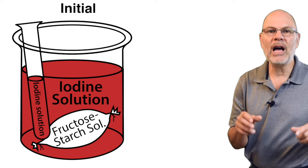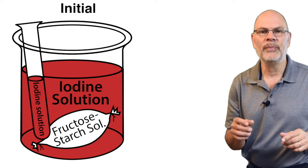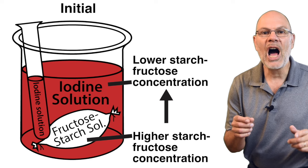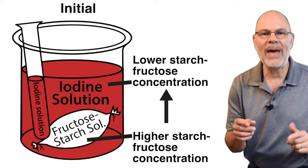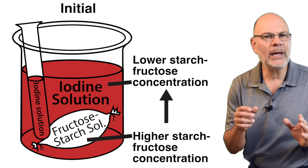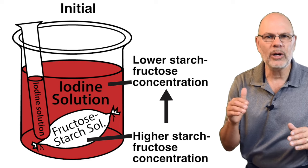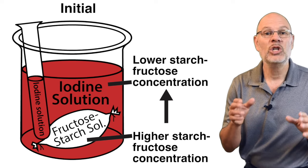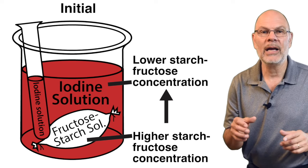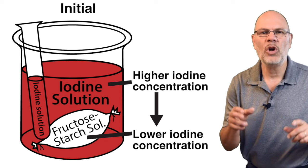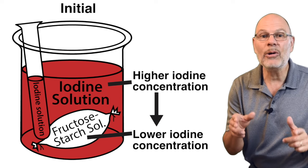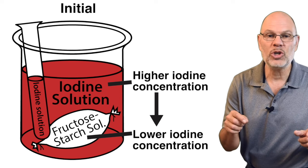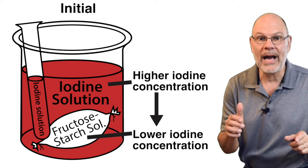First of all, a key process at work in this lab is diffusion. At the start of this experiment, starch and fructose were in higher concentration inside the bag than outside. So we'd expect these substances to flow down their concentration gradients from where they are inside the bag to where they're not outside the bag. The iodine, by contrast, was in higher concentration outside the bag than inside, and we'd expect the iodine to flow down its concentration gradient and enter the bag.